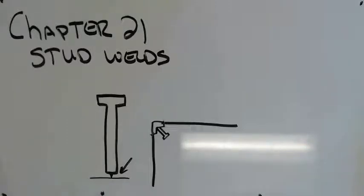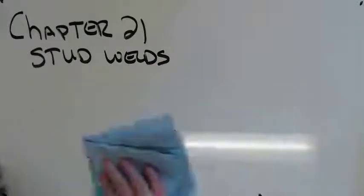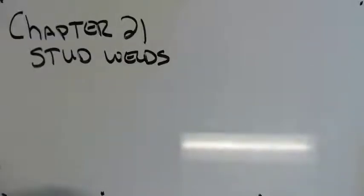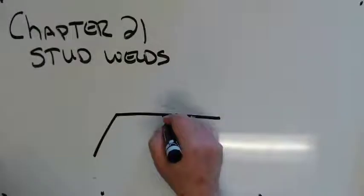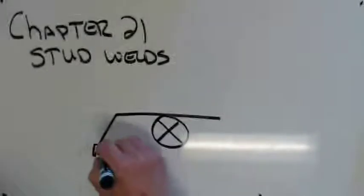Having said that, let's talk about some of the weld symbols. Symbols for a stud weld, first off, they are always put on the arrow side. There is no other side symbology for a stud weld. It'll be that guy with an X through it. That's a stud weld.